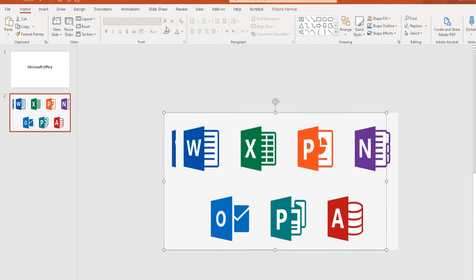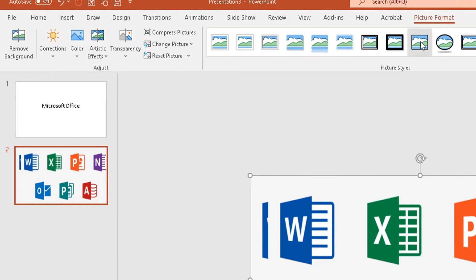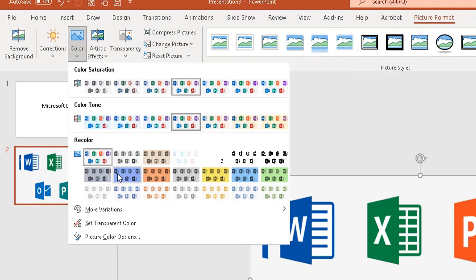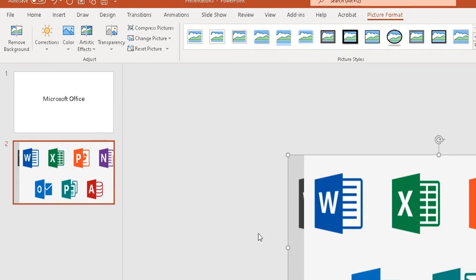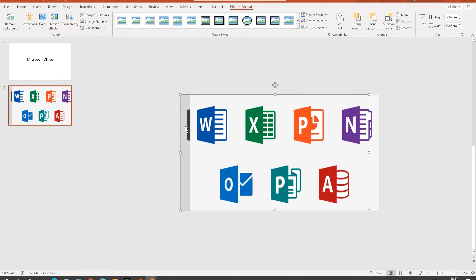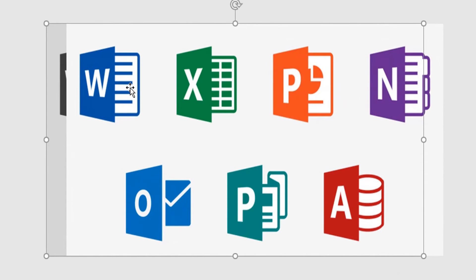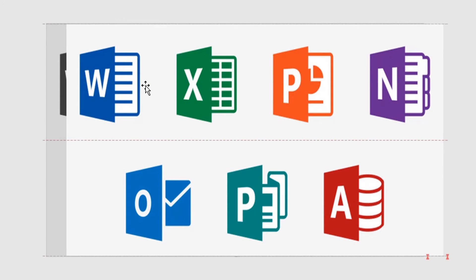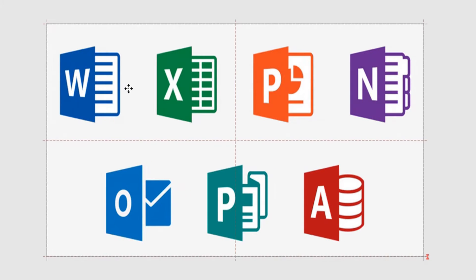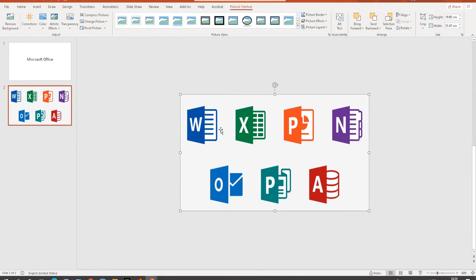With the background image highlighted, I go to Picture Format in the ribbon, then all the way to the left to the Color option under the Adjust section. I click the down arrow and choose a grayscale color — Gray Accent Color 3 Dark. Once applied, the background image is gray while the foreground picture remains in color. I then move the foreground picture back across to the left so it completely covers the background. That's the first step done.